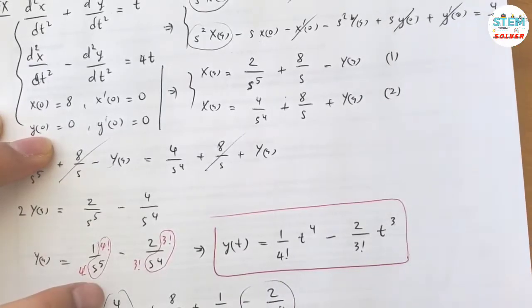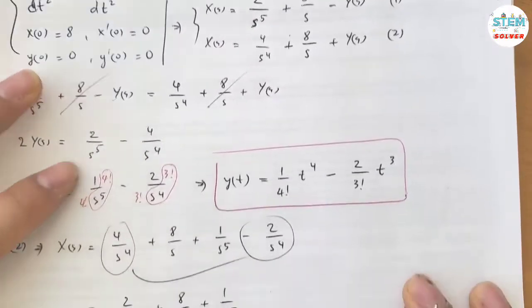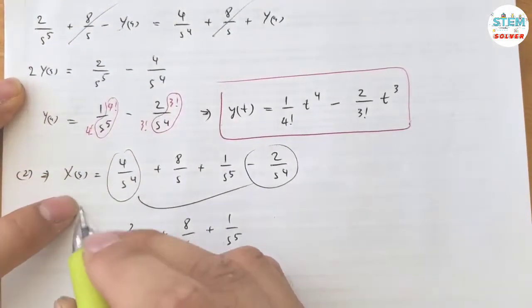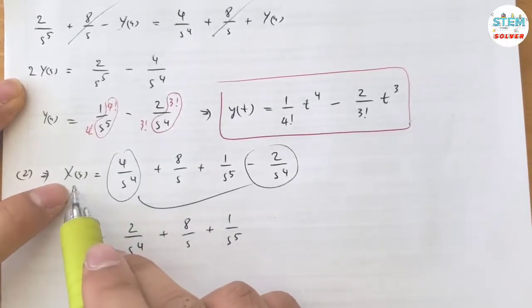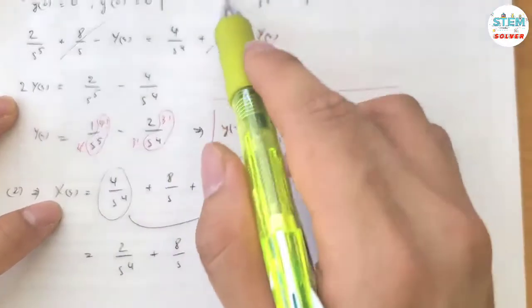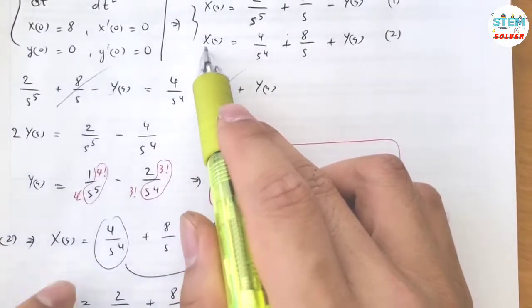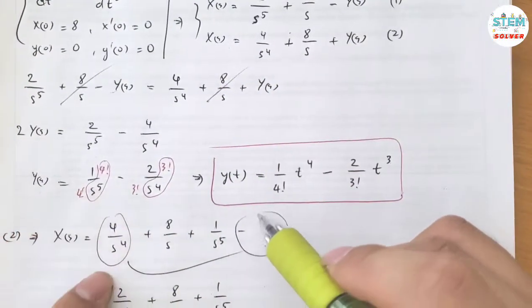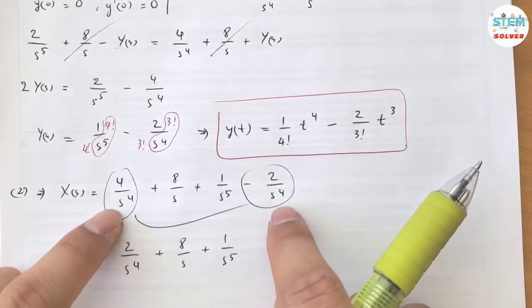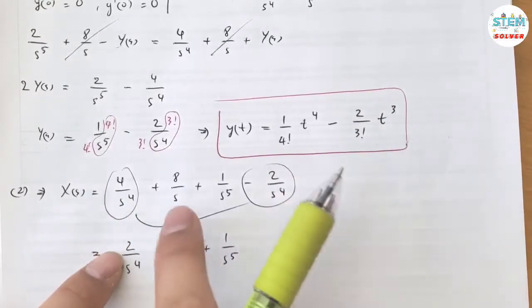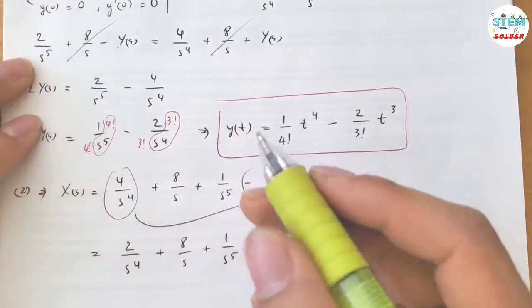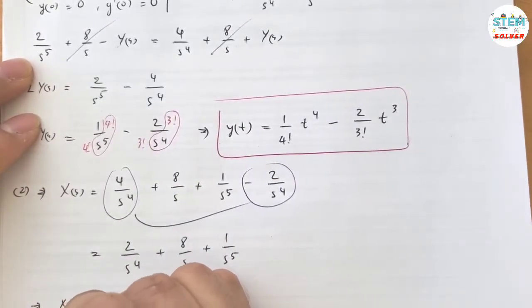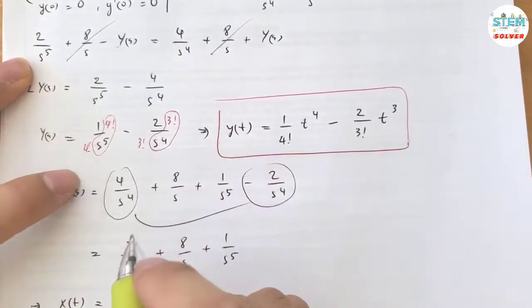Simplify this, I have 2 over s to the fourth plus 8 over s plus 1 over s to the fifth. Basically what I did was put in Y(s) which is in here. Simplify this, same denominator, combine the top together. Now apply the inverse on both sides, similar to this one.